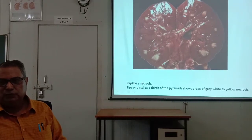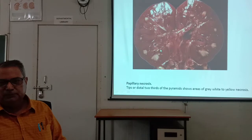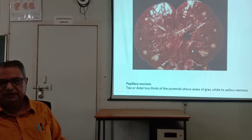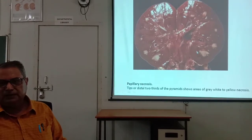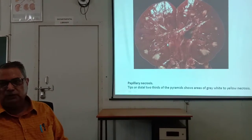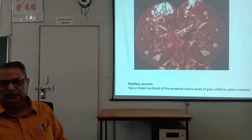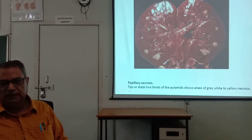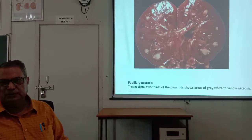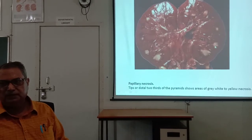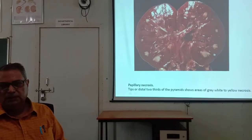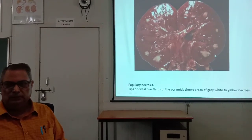In papillary necrosis, the tips of the distal two-thirds of the pyramids show areas of grey-white to yellow necrosis. The renal pyramid is affected, appearing as grey-white or yellow necrotic areas.